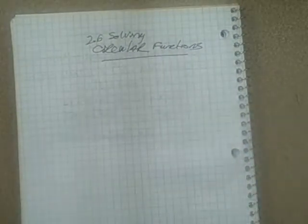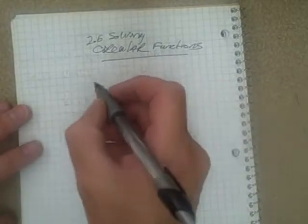Okay, we're still working in 2.6 solving circular functions. I did a couple examples last tutorial and I'm going to do a couple more different types of examples. There are some good examples in the textbook that you can follow along there as well, and I'm doing similar examples but they're a little different. So hopefully that will give you a lot of examples to look at.